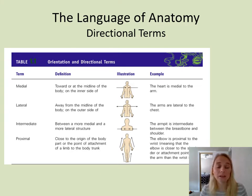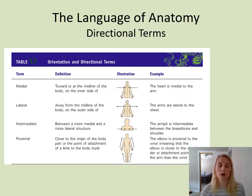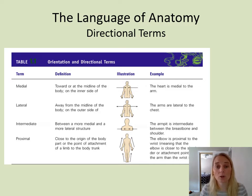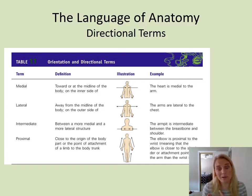The next pair is medial and lateral. We are symmetrical, so we have a midline that goes right down the center of our bodies. Things that are closer towards that midline are called medial; things that are further away from that midline are called lateral. And intermediate means somewhere in between.